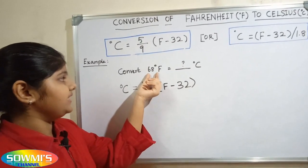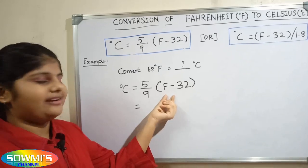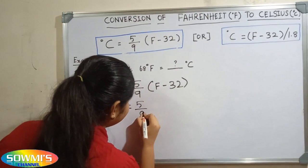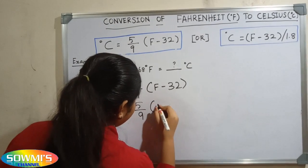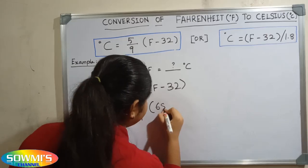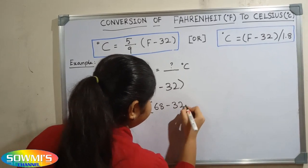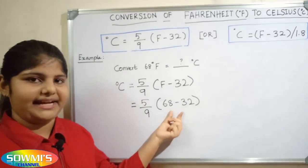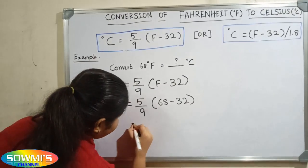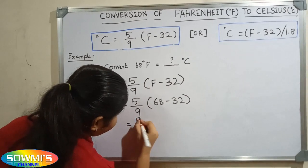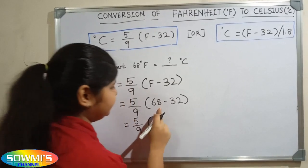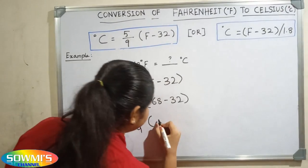Now we will substitute 68 in the place of Fahrenheit. So 5 by 9 multiply 68 minus 32. First we will solve the operation in the bracket. 5 by 9 multiply 68 minus 32 is 36.